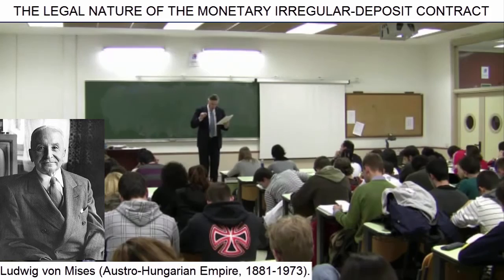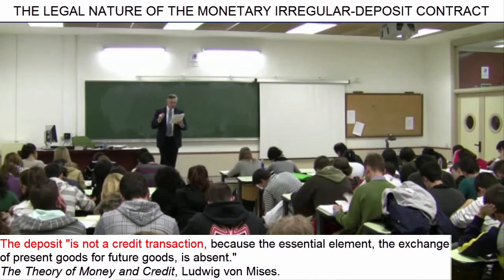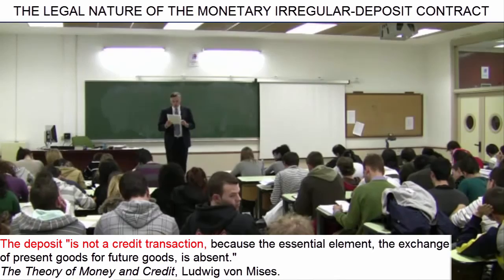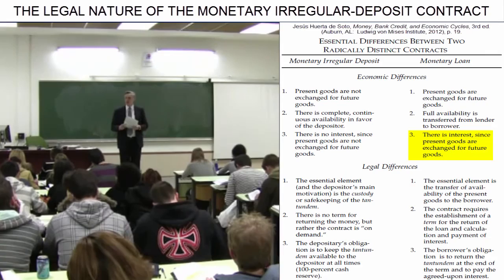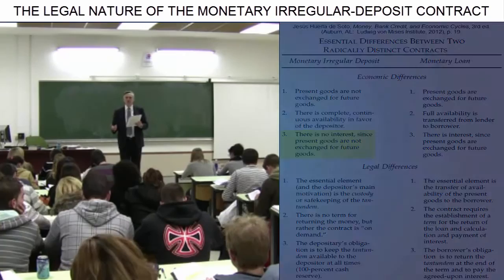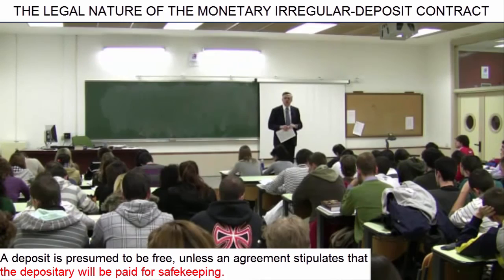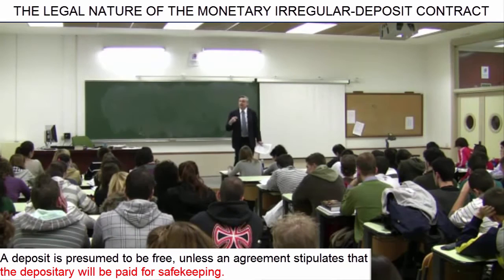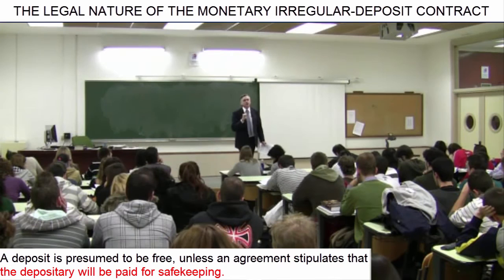Mises writes that the deposit is not a credit transaction, because the essential element — the exchange of present goods for future goods — is absent. As a result, a loan includes interest, while a deposit does not include interest. There is no interest agreement. A deposit is assumed to be free, unless otherwise explicitly agreed upon. And if a payment is stipulated in a deposit, it is the depositor who must pay the depository, precisely so that she can cover the safekeeping expenses, and not the other way around.